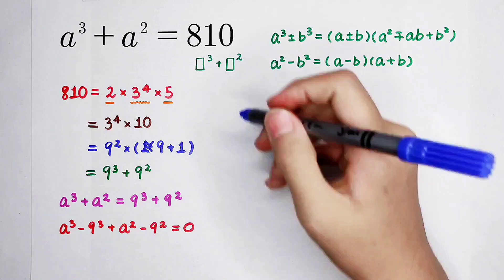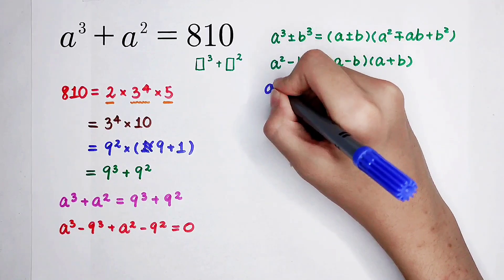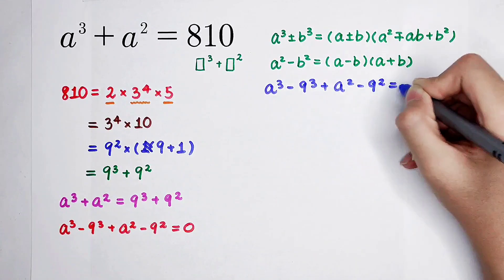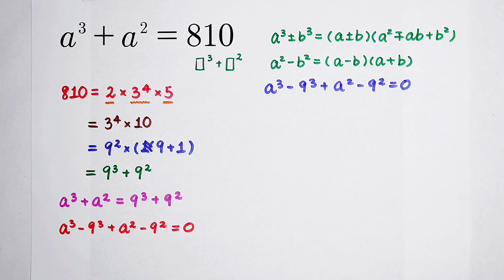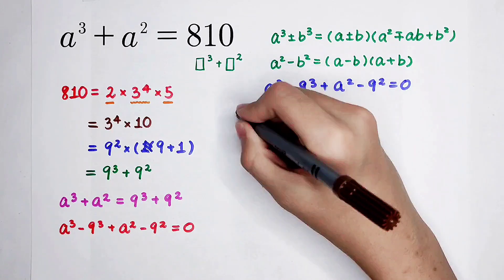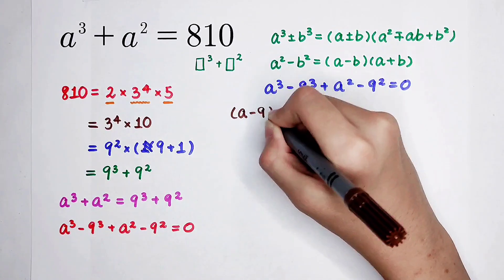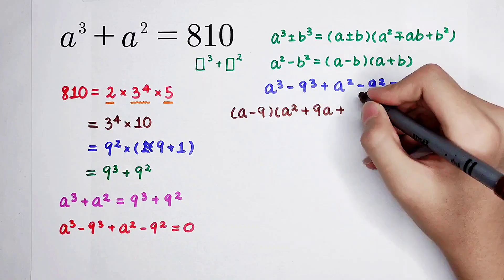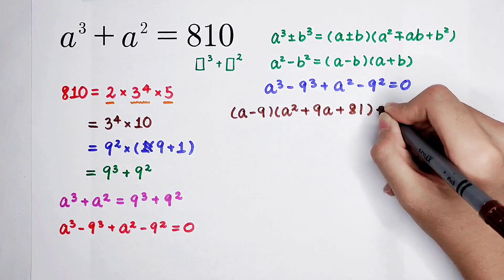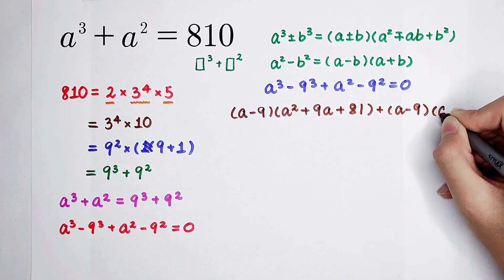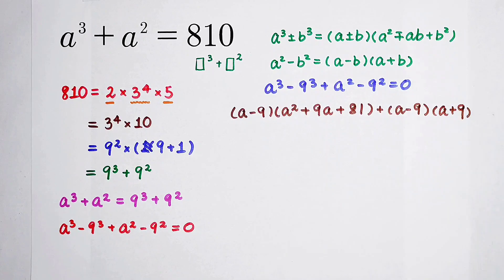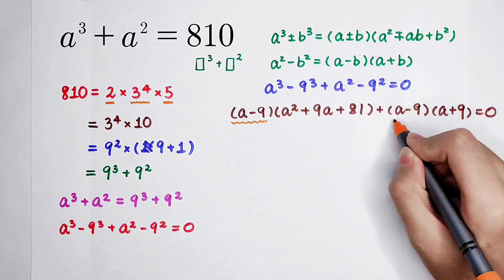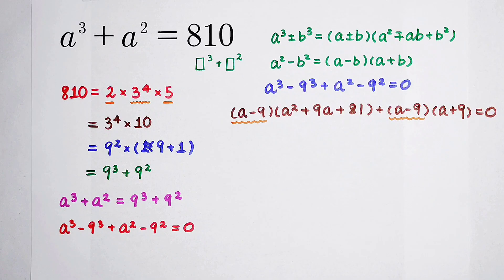a cubed minus 9 cubed is a minus 9 times a squared plus 9a plus 81, plus a minus 9 times a plus 9 equals 0. Here we have a minus 9 and a minus 9. Check it out.